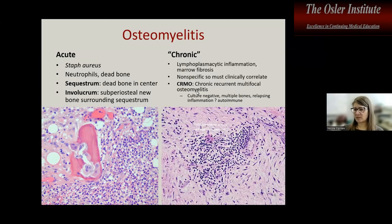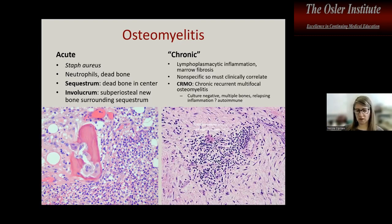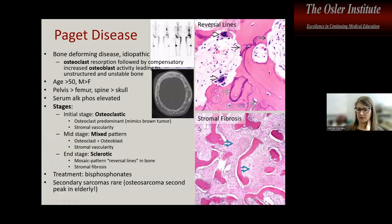There is an entity called CRMO — chronic recurrent multifocal osteomyelitis — usually in kids, with multiple foci showing fibrosis and chronic inflammatory cells, but negative on multiple cultures. This may be an autoimmune disease. Just be mindful of this CRMO picture.